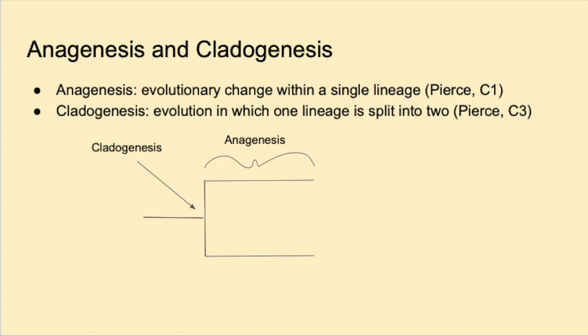On our tree, it is important to point out anagenesis, which is the evolution within a lineage over time. This is represented by horizontal lines, which are relative to evolutionary time. Organisms evolve continuously over time, so this evolutionary change is shown by the horizontal lines in our phylogenetic tree.